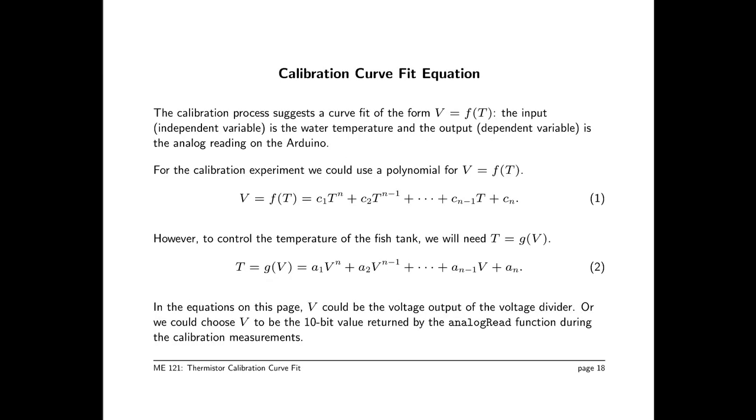The calibration process as it unfolded was to vary temperature, that is, make a mixture of water at different temperatures, and measure the output of the voltage divider. So it would seem that the independent variable is T, and the dependent variable is V. So equation one suggests that we should make a curve fit of V as a function of T, shown here as a polynomial. However, to control the temperature of the fish tank, we really need temperature as some other function, we'll call it G, of the analog readings.